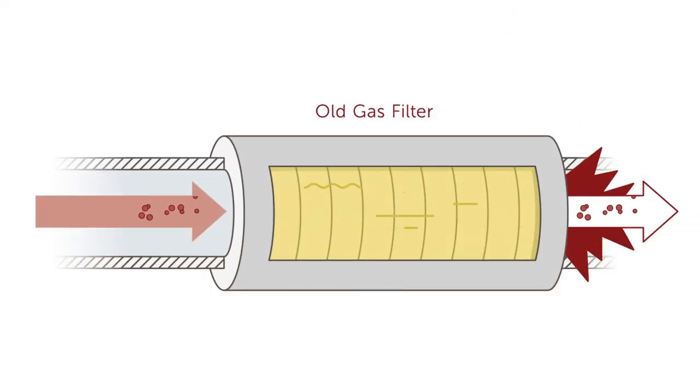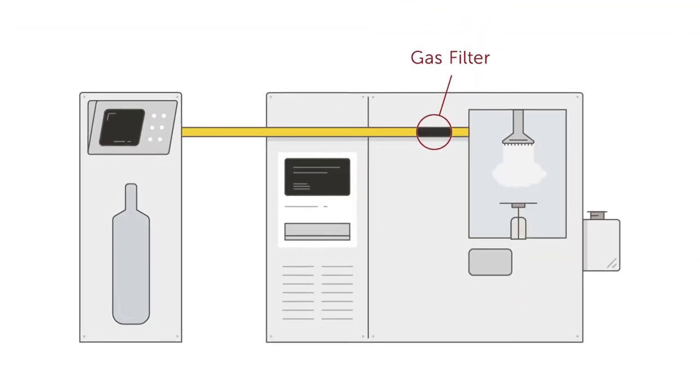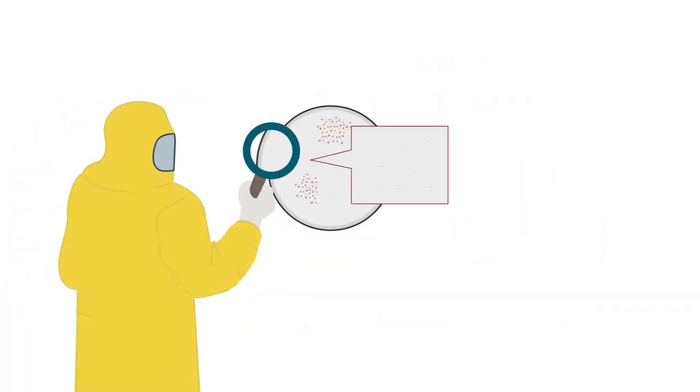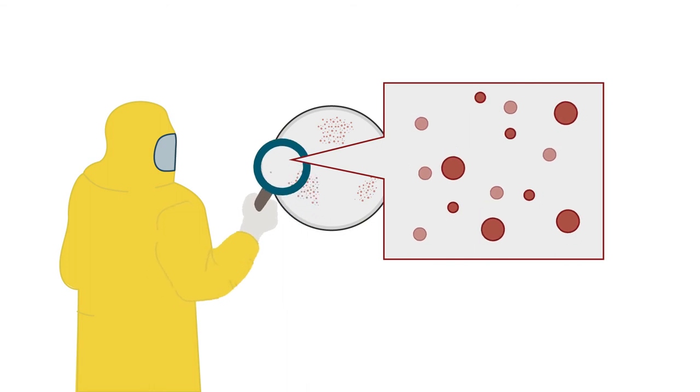However, increased pressure means increased gas velocity, which can lead to previously trapped particles being released back into the gas stream. If these particles pass to the wafer, contamination reaches the wafer and costly defects can result.